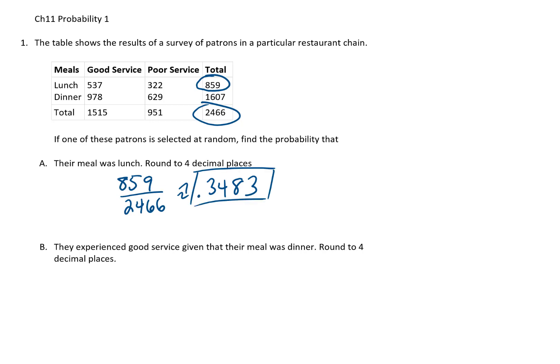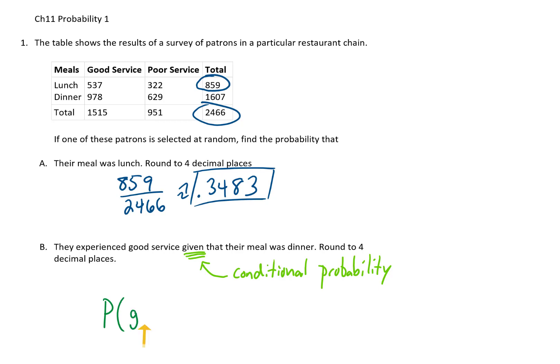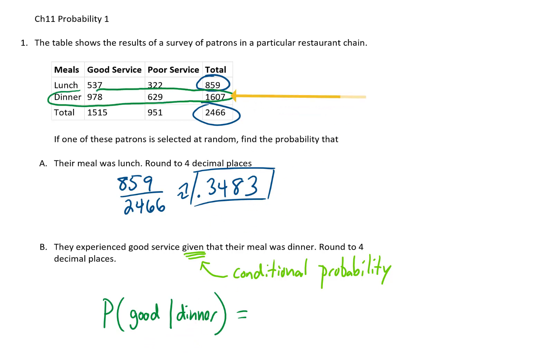Next question: what is the probability that they experienced good service given that their meal was dinner? The word 'given' in this problem suggests that this is a conditional probability. The notation is: we want the probability of good service given that their meal was dinner. So we're assuming the meal was dinner — that means we're looking at that row and ignoring everything else — and asking: from that row, what is the probability that they got good service?